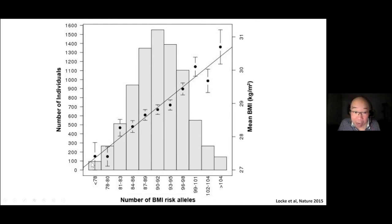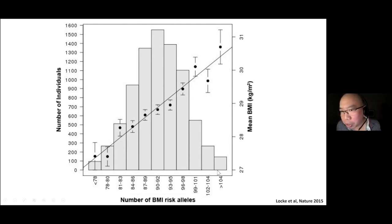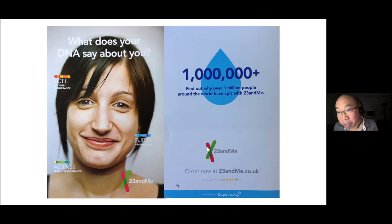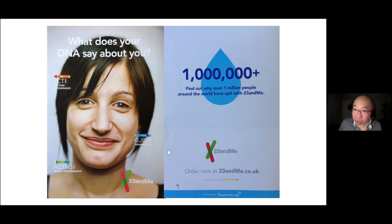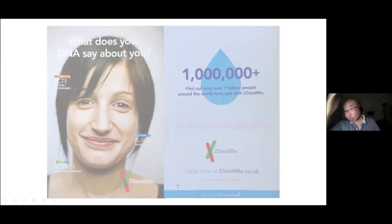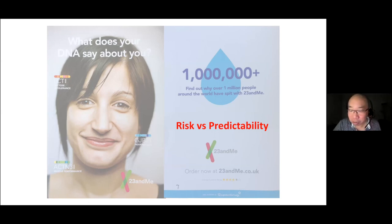The buzzy thing these days are polygenic risk scores. We can add up all the risk alleles we carry and plot them against BMI — with enough people, you see a normal distribution and a linear relationship: the more risk alleles you carry, the more likely you are to be heavier. Companies like 23andMe and DNAFIT leverage polygenic risk scores to make predictions. The problem is they fundamentally misunderstand the difference between population-level risk, which requires hundreds of thousands of people, and using it as a diagnosis. It just doesn't work, at least not for now.